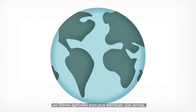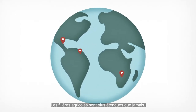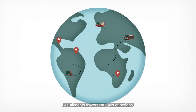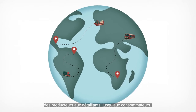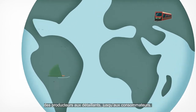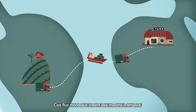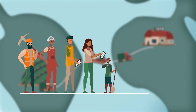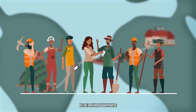Today, agricultural supply chains are more extensive than ever. Food crosses countries and oceans, moving from producers to retailers to consumers. These dynamics create millions of jobs around the world, critical for livelihoods, economic growth and development.